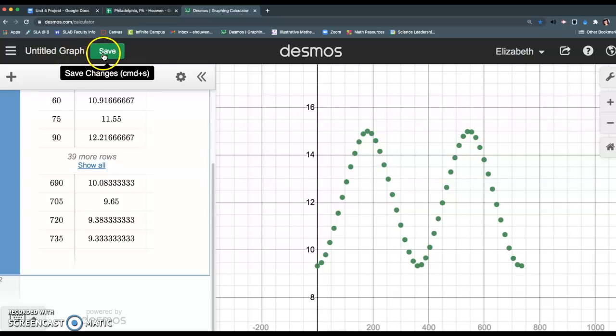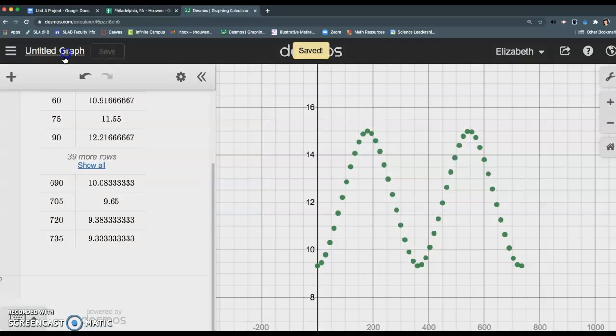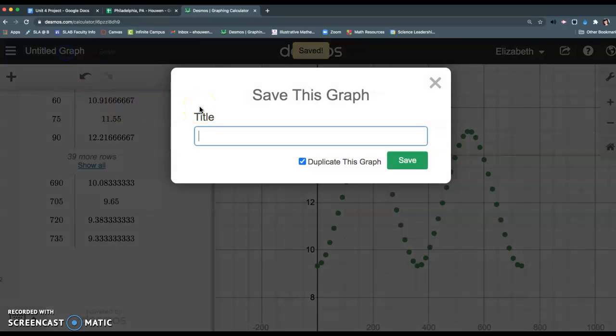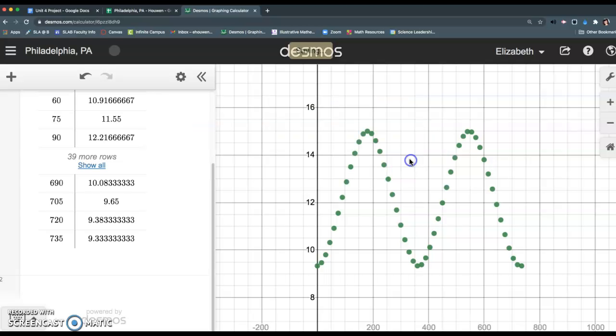The next thing you want to make sure you do is save your changes. You can change the name of this to be your city or your quarter, whatever project you want to do, but you want to always make sure you're clicking save. If you try to navigate off and close the tab, Desmos will ask you.